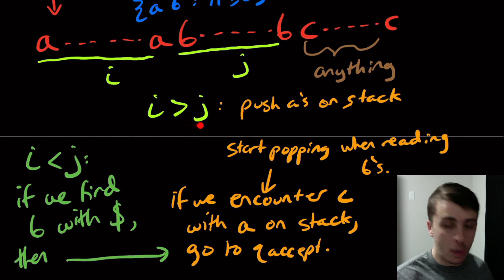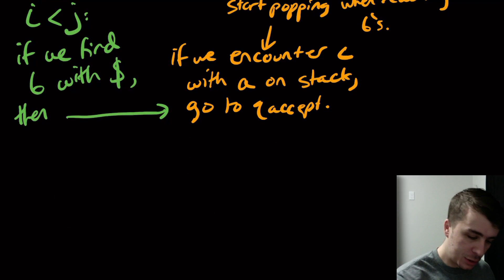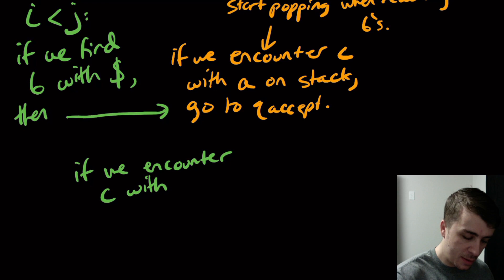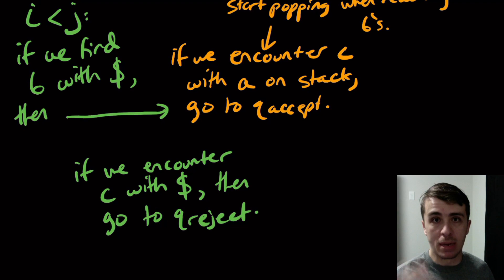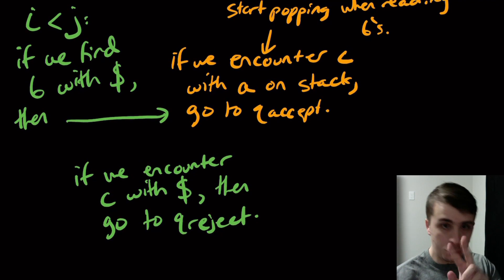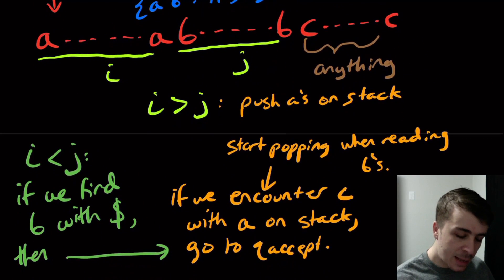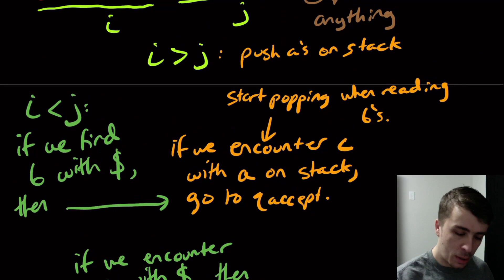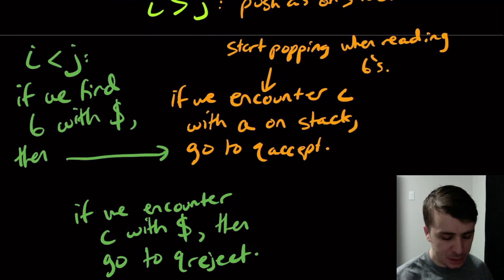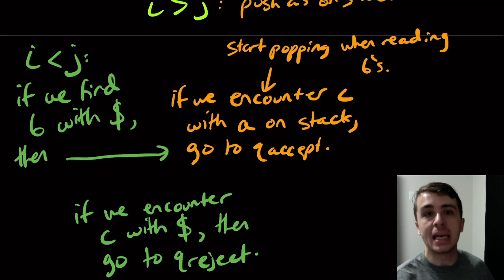And the only other possible case is when they're equal to each other, in which point you'll find C with a dollar sign on the stack. So if we encounter C with the dollar sign on the stack, then go to Q reject. So remember we had that one dead state where we just read the rest of the input when we showed the closed under complement part. And we had two states, Q accept, Q reject. And these, since there's only two characters on the stack, which are whatever you push on when you're reading the A part, so let's just say we're pushing A's and the dollar sign, then these two cases are every possible thing that can happen when you encounter a C, which makes it deterministic.